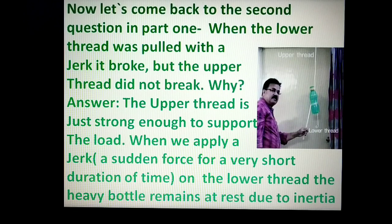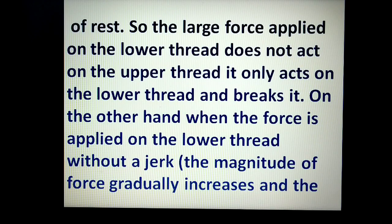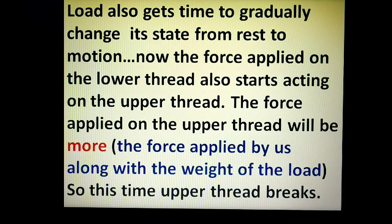Now let's return to the second question from part one. When the lower thread was pulled with a jerk, it broke, but the upper thread did not. Why? The upper thread is just strong enough to support the load. When we apply a jerk — a sudden force for a very short duration — on the lower thread, the heavy object remains at rest due to inertia of rest, so the large force applied on the lower thread does not act on the upper thread; it only acts on the lower thread and breaks it. On the other hand, when force is applied steadily without a jerk, the magnitude of force gradually increases and the load also gets time to gradually change its state from rest to motion. Now the force on the lower thread also starts acting on the upper thread, and that force is greater — because of our applied force plus the weight of the load — so this time, the upper thread breaks.